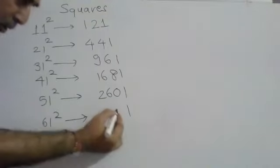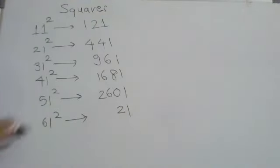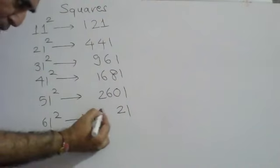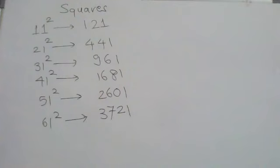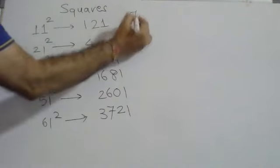Same with 61 - write one, double of six is twelve so carry one, six square is thirty-six plus one is thirty-seven. So 61 square equals 3721. Now you can do the square of 71.